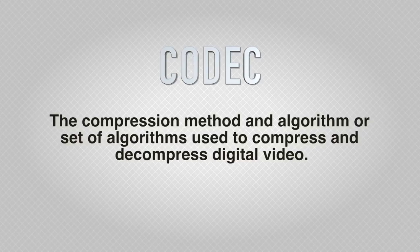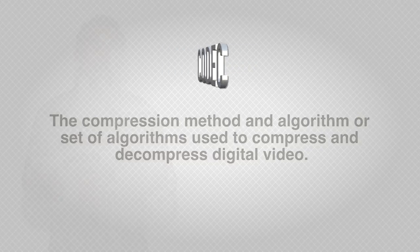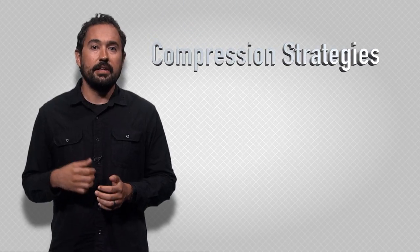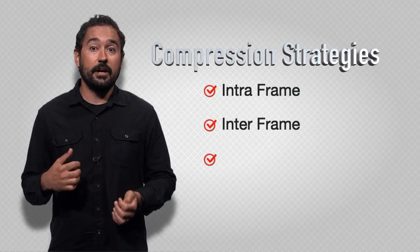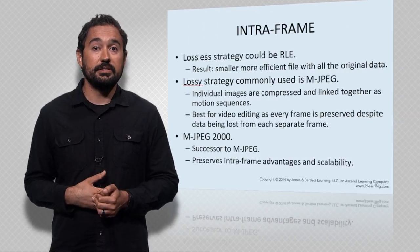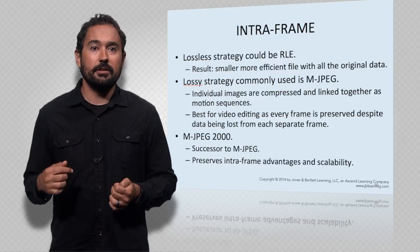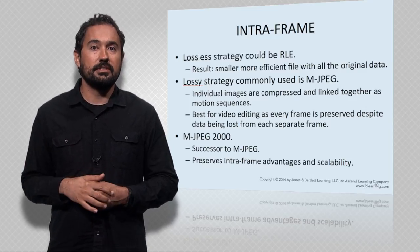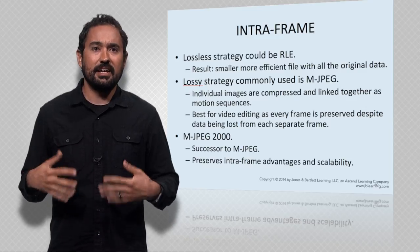Remember that all video delivery formats incorporate some form of compression. A codec is defined as the compression method and algorithm or set of algorithms used to compress and then decompress the digital video. This is very important to know because there are many codecs available for video compression and each one has a different application and delivery. There are three strategies for compressing video: intra-frame, inter-frame, and variable bitrate, or VBR. Intra-frame compression re-encodes the information in a single frame of video, where each frame is encoded separately into a format such as JPEG and then linked together to produce a video.